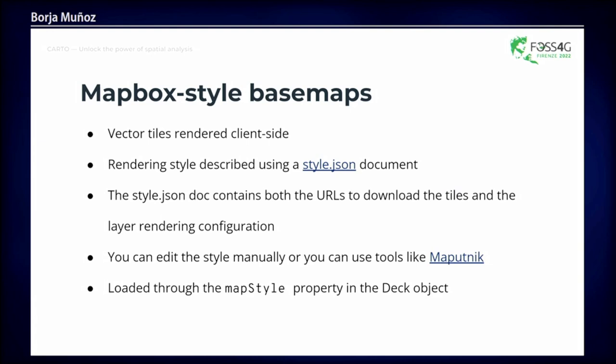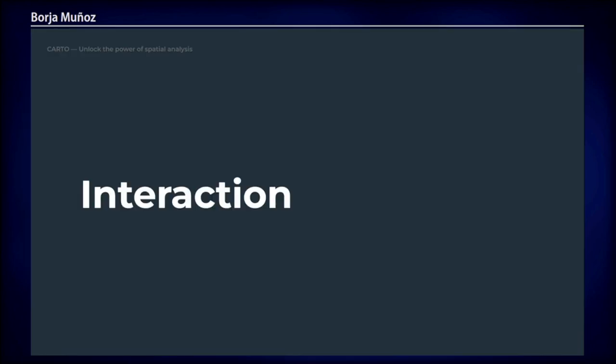While you can work with raster tile base maps, most people today use vector base maps. It's quite easy to work with Mapbox-style base maps using a style.json document, which you can edit and change client-side to control how the base map looks. This is probably the most convenient way to work with base maps.